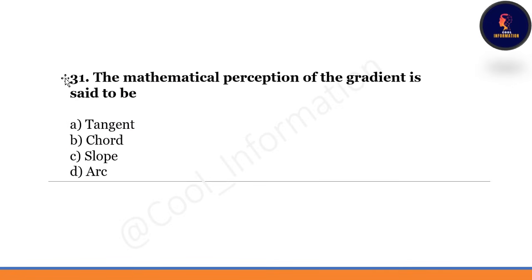The mathematical perception of the gradient is said to be — option A: tangent. Option B: chord. Option C: slope. Option D: arc. Correct option is C — slope.